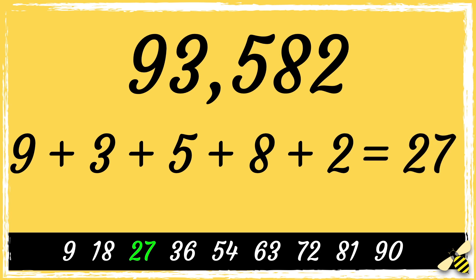27 is a multiple of 9, which means that 93,582 is divisible by 9.